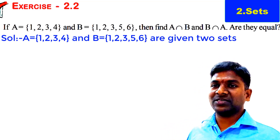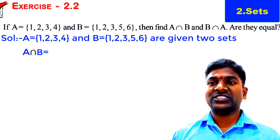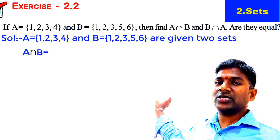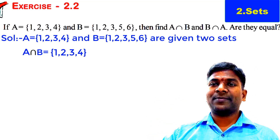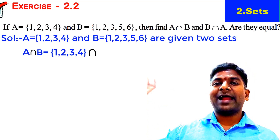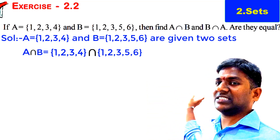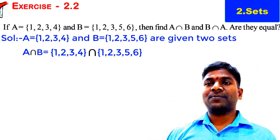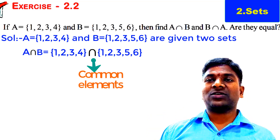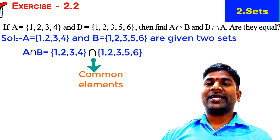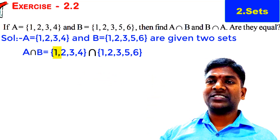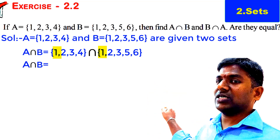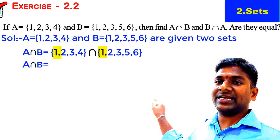First, let's find A intersection B. A intersection B — we write the elements of A: {1, 2, 3, 4}, the operation is intersection, and the elements of B: {1, 2, 3, 5, 6}. A intersection B means the common elements of A and B. We find that 1 is a common element in both Set A and Set B, so we write 1 in A intersection B.